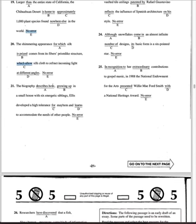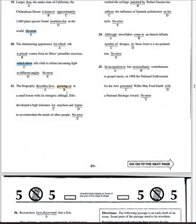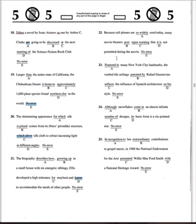Number 21: 'The biography describes how, growing up in a small house with six energetic siblings...' You can cancel the commas and the middle part out. For Matthew, 'learns' should be 'learned' — it should maintain parallelism with 'developed.' Past tense is required, so the answer is 'learned.'